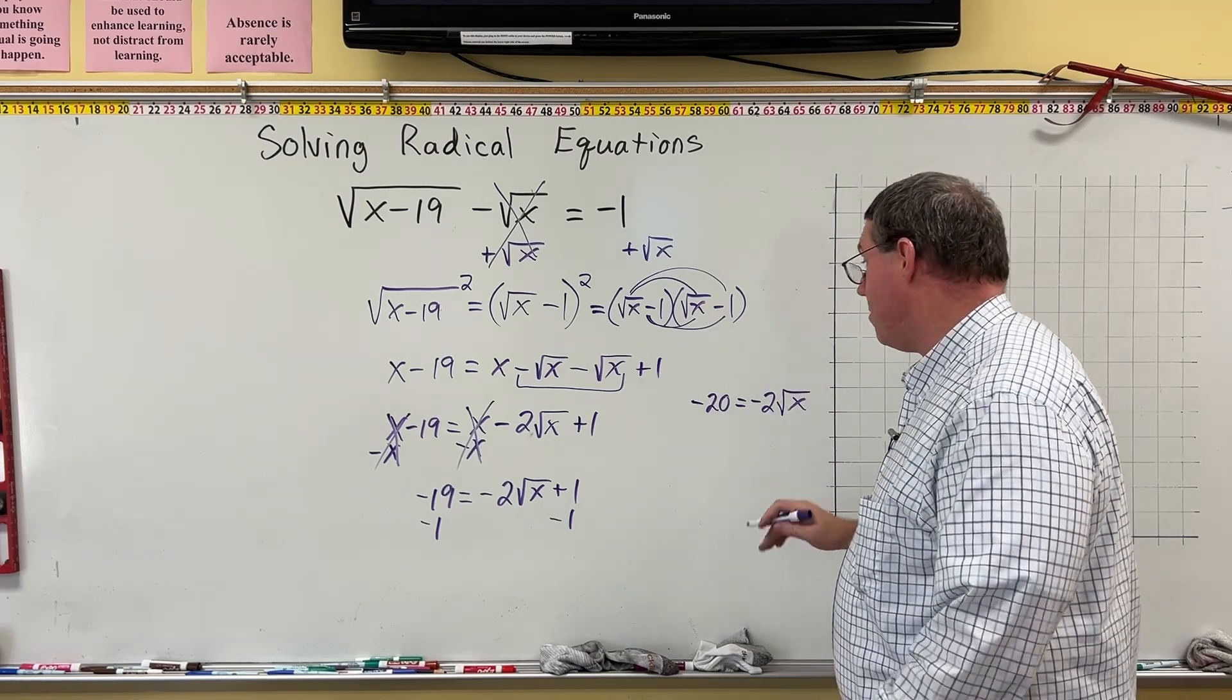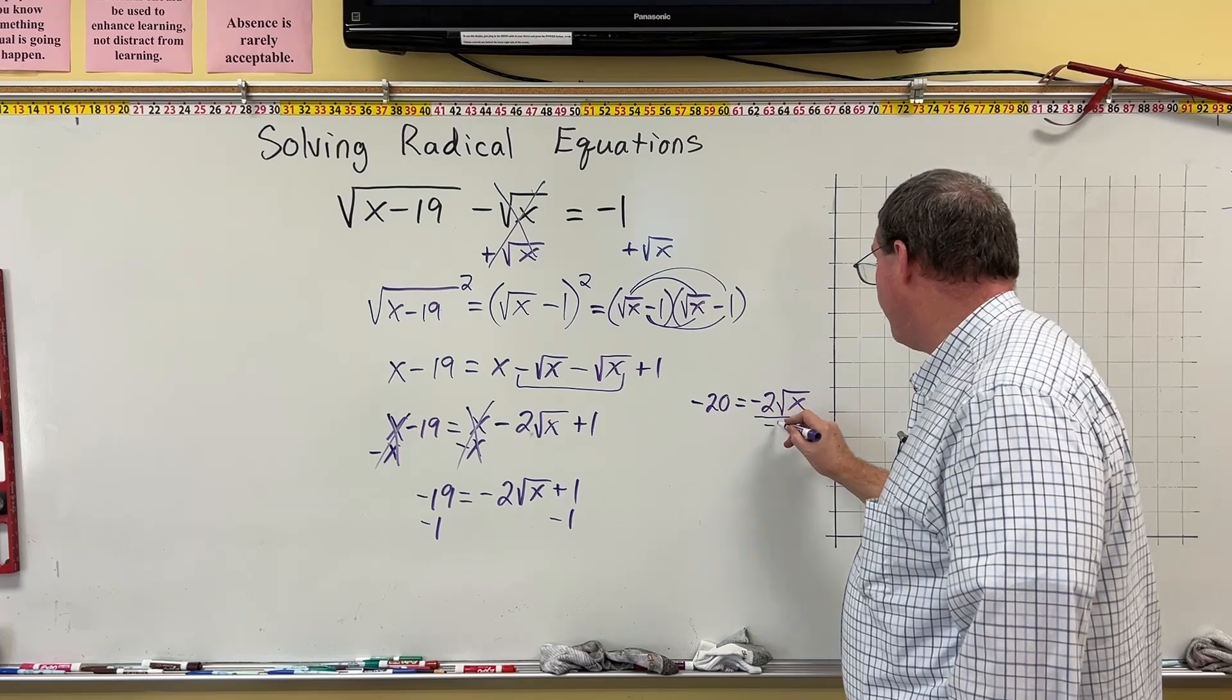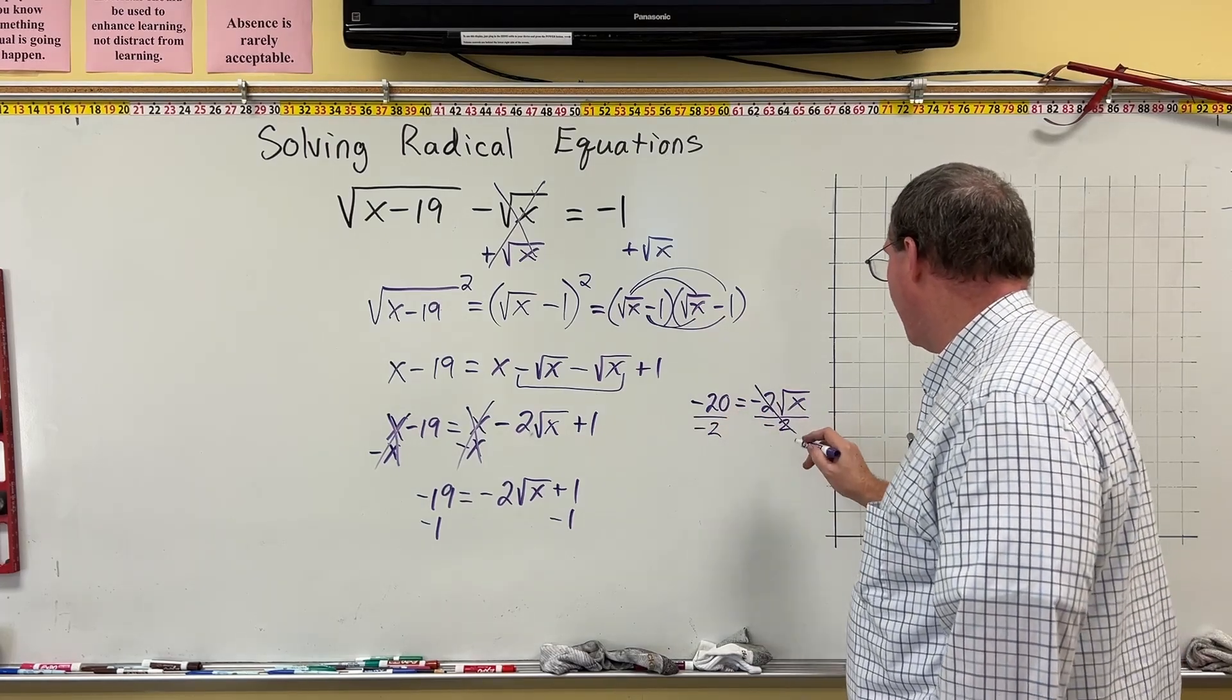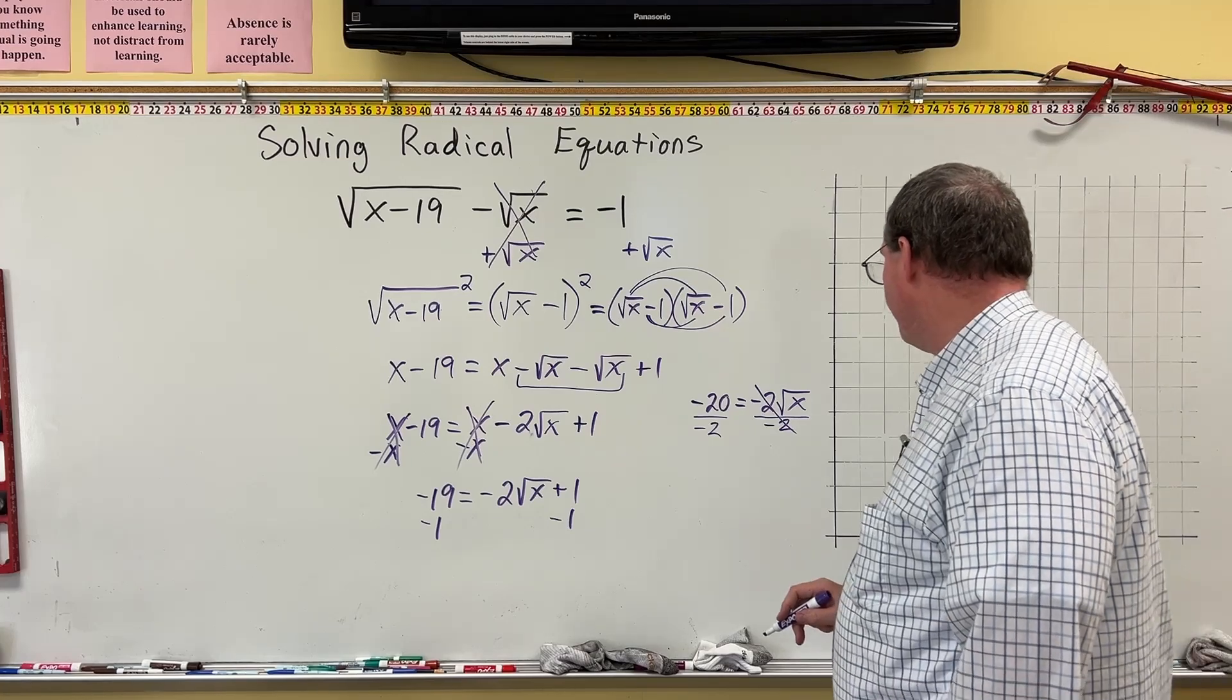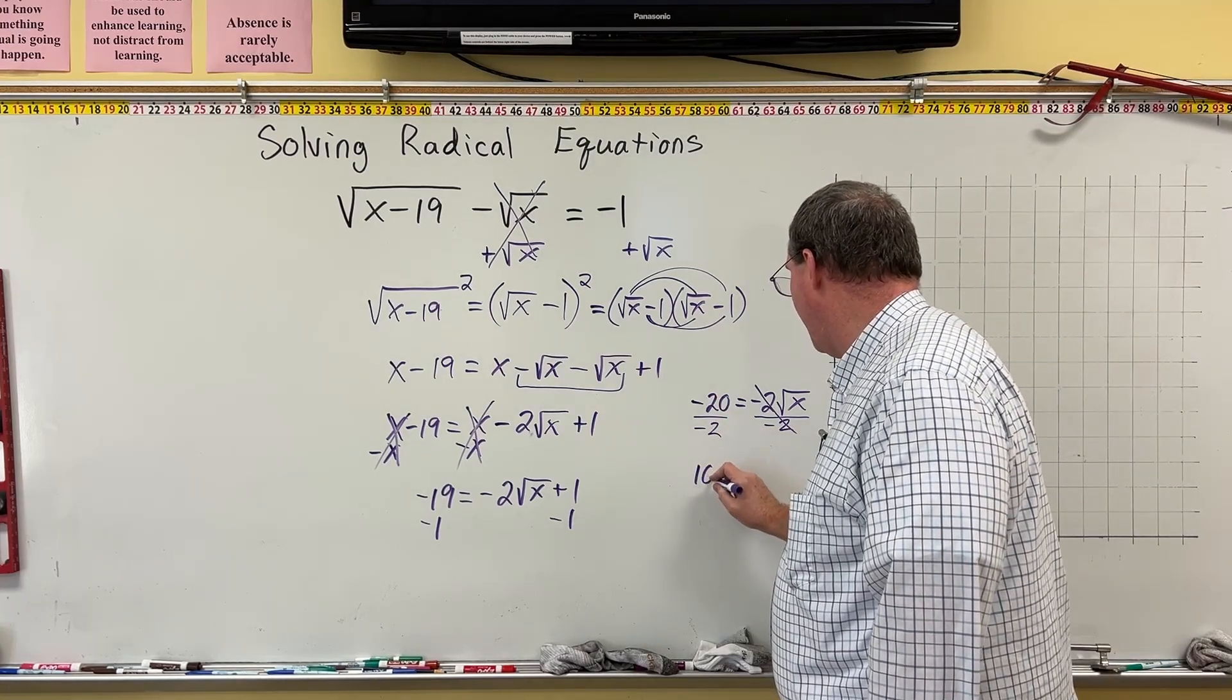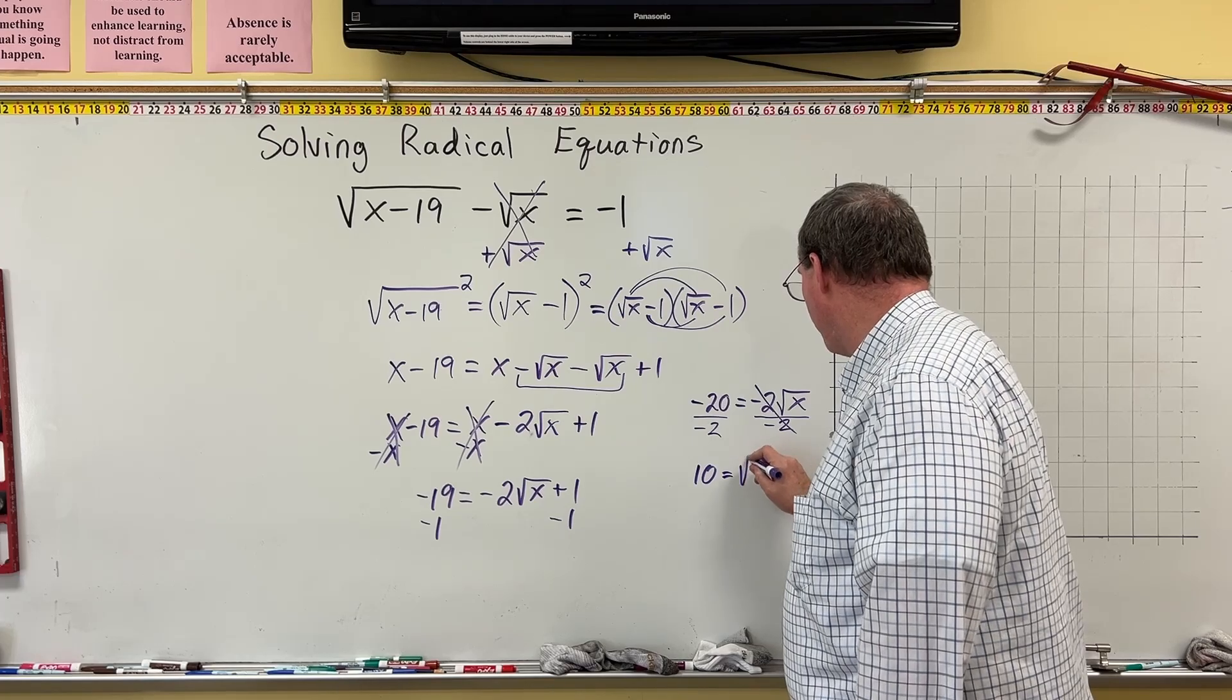It's getting way easy here. Now watch. I'm going to divide by negative 2 here, divide by negative 2 here. Here it cancels the negative 2. And negative 20 divided by negative 2 here winds up being 10 is equal to the square root of x.